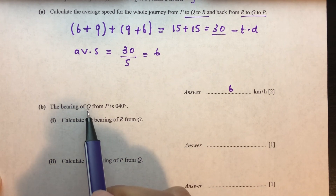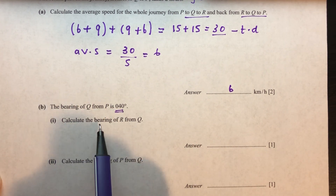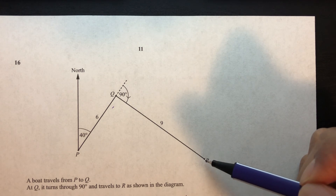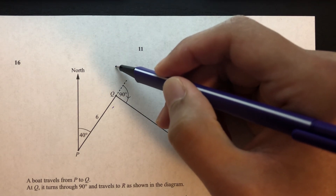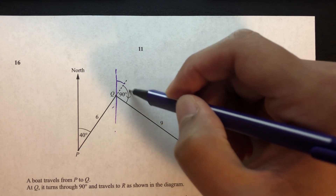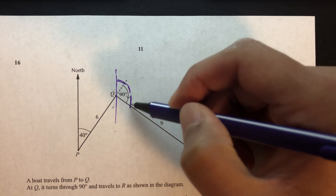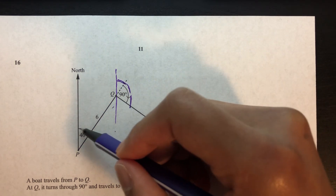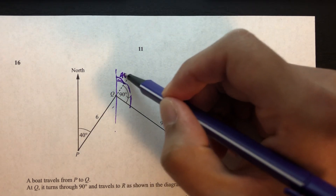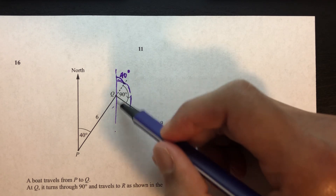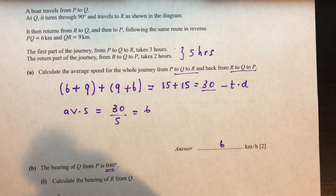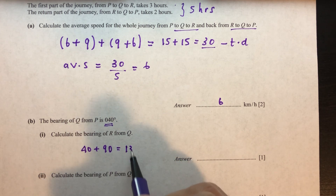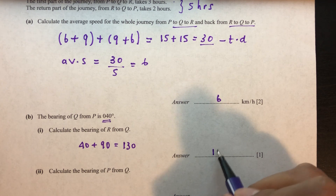Part B: the bearing of Q from P is 40 degrees. Calculate the bearing of R from Q. Drawing a north line at Q, since the two north lines are parallel, the alternate angle is also 40 degrees. The bearing from Q to R is 40 plus 90, which equals 130 degrees. So the bearing of R from Q is 130 degrees.